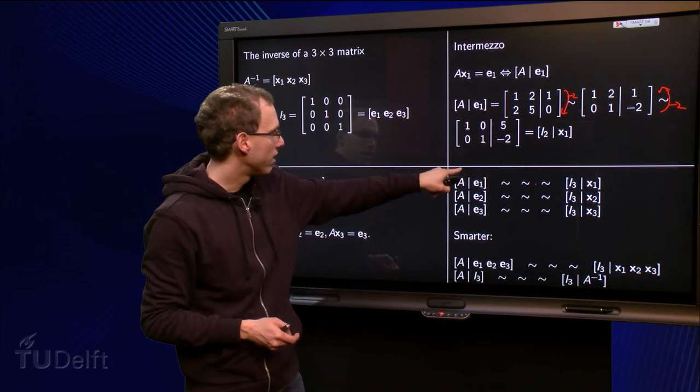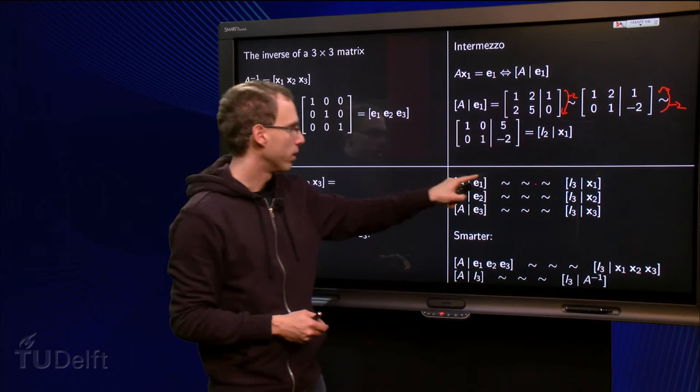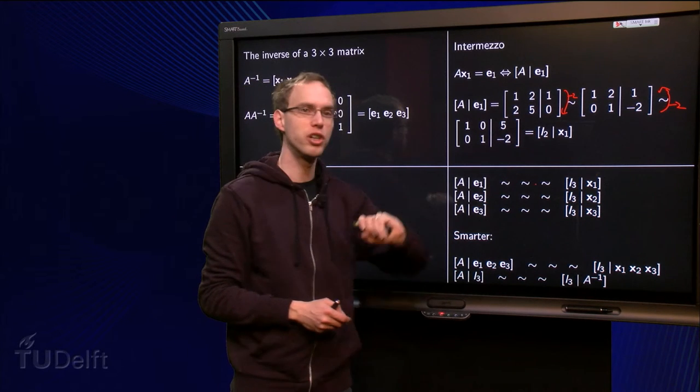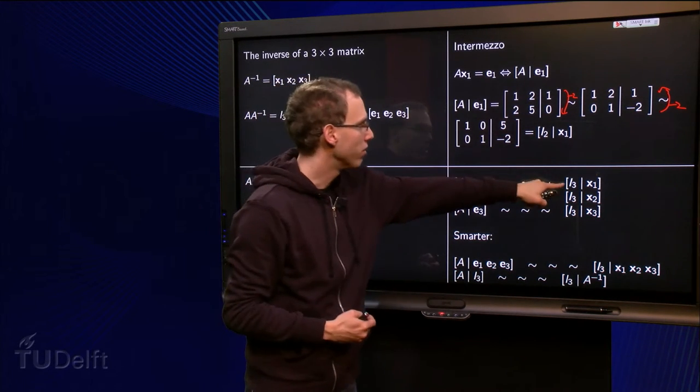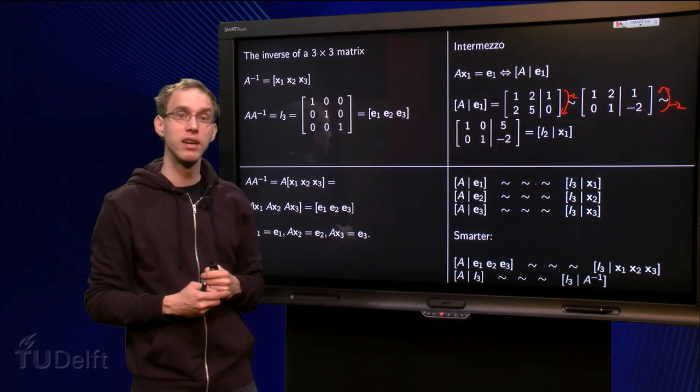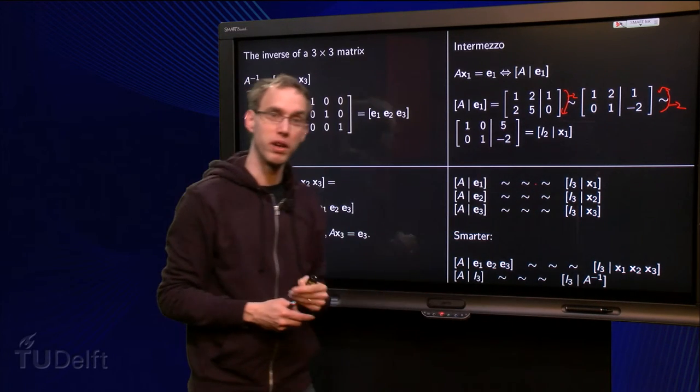So we start with A bar e1, row reduction, row reduction, row reduction, several steps, until we are here, we have I3, and then we have gotten our solution x1 after the bar.